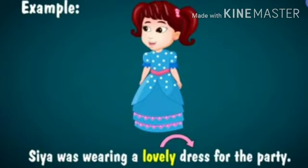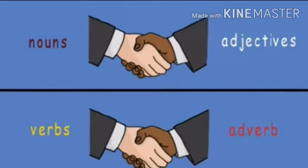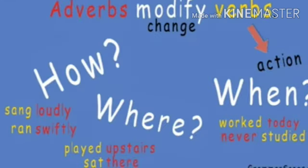That is the difference you have to understand — the relation between nouns and adjectives is the same as the relation between verbs and adverbs. As an adjective describes a noun, an adverb describes a verb. Adverbs modify verbs — that means adverbs describe or change the verbs. Just by questioning the verb with how, where, and when, you can identify the adverb.